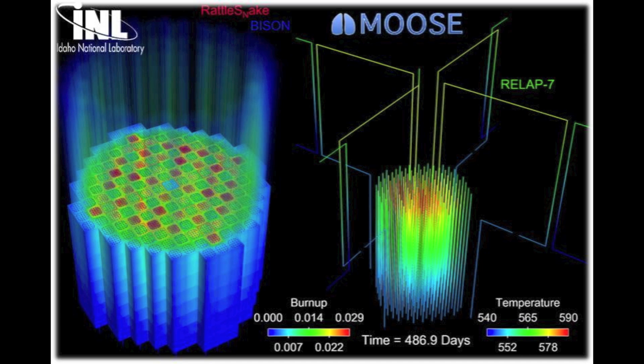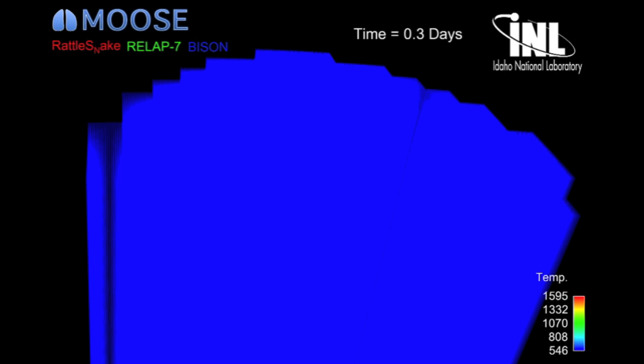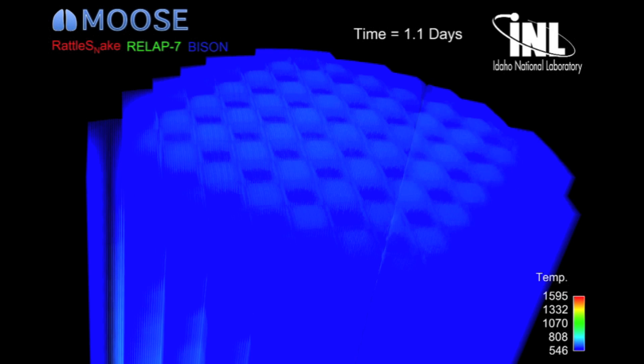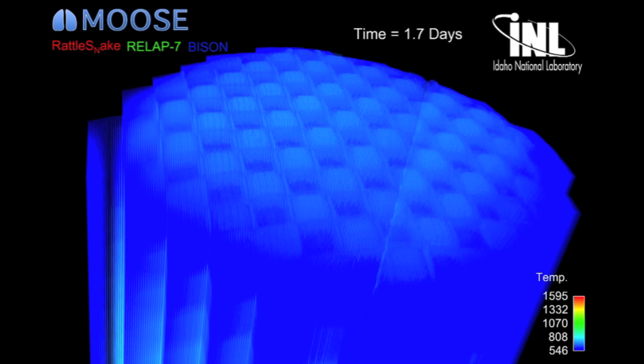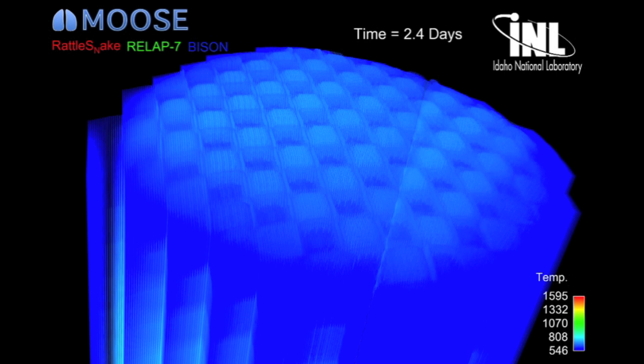Now we want to actually look at the behavior of the fuel as it went through those two fuel cycles. In this movie, we can see the behavior of each of the 40,000 individual fuel rods, and what we're looking at is the movement of the fuel stacks within each one of those rods.